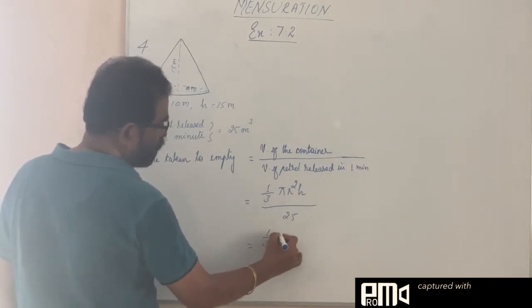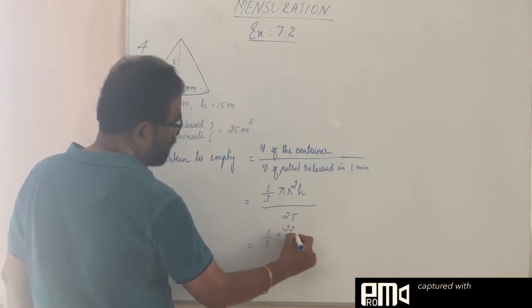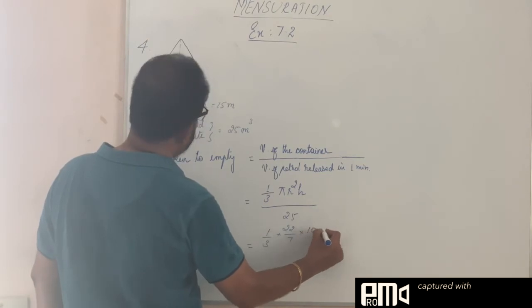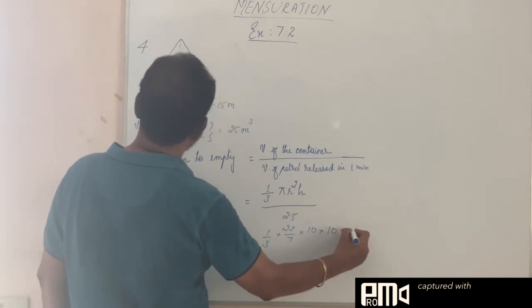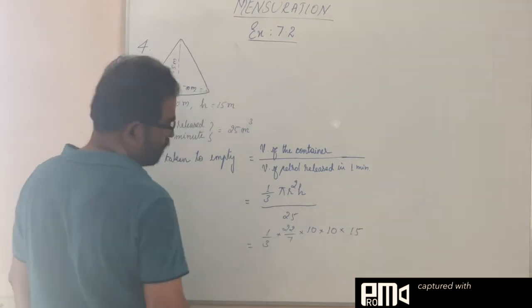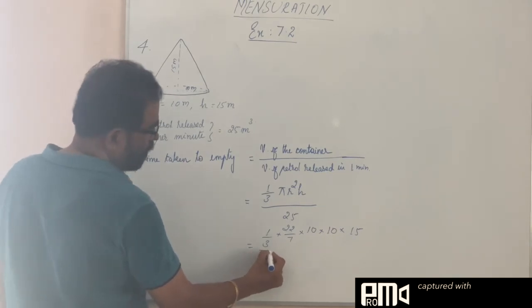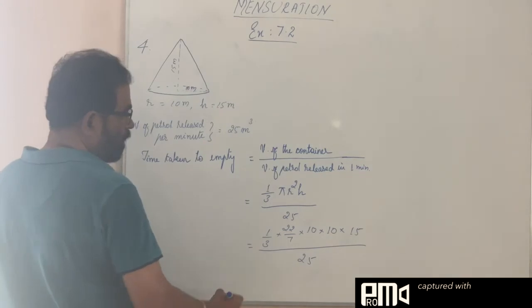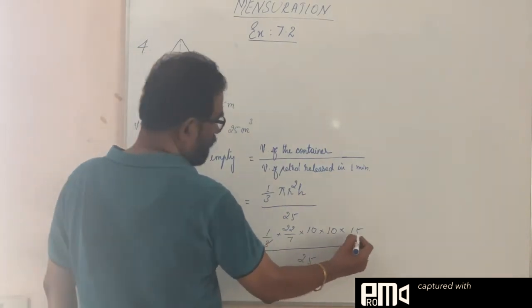So now this is equal to one-third into 22 by 7 into r, what is r? It is 10, into 10. Height is 15, divided by 25. I can cancel this 3 and 15, so I get here 5. This 5 and 25 we can cancel, we get 5 here.